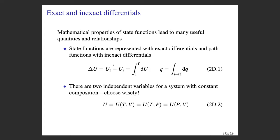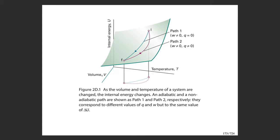For the state function, the change is completely independent of the path. You can take any path you want between the initial state and the final state and the change in the state function will always be the same. Here on this slide we're looking at the internal energy as a function of the volume and temperature of the system, with some initial state and a final state, and we're looking at two different paths going between them — one in green and one in red.